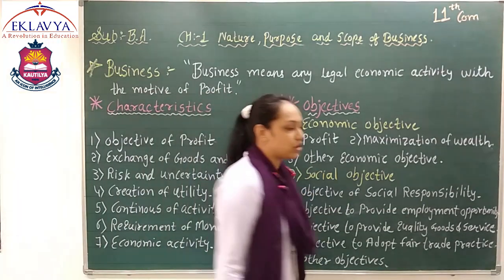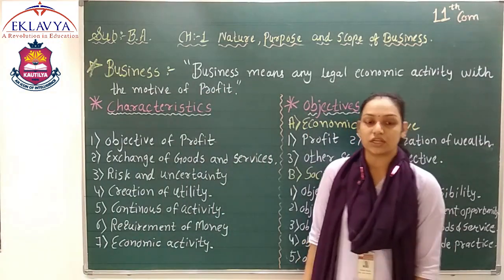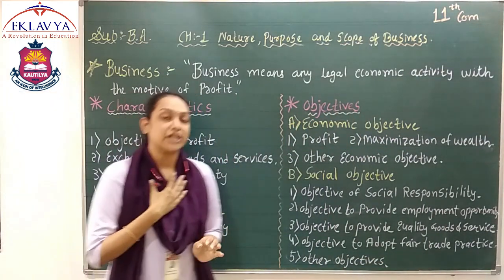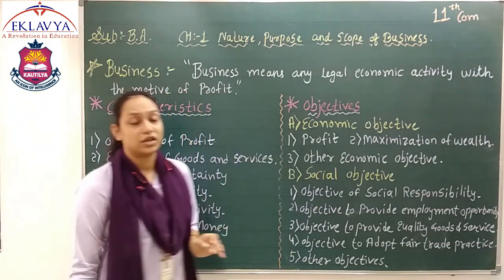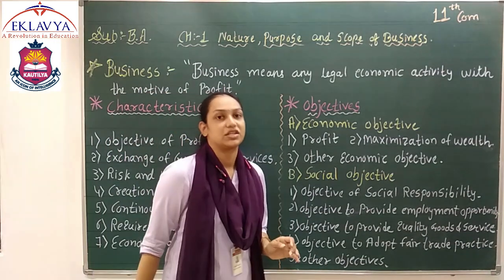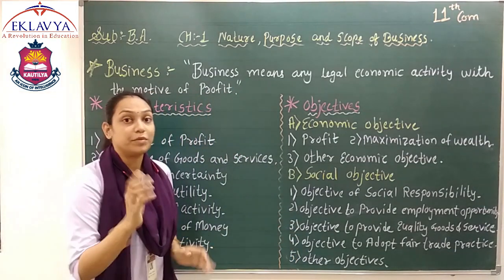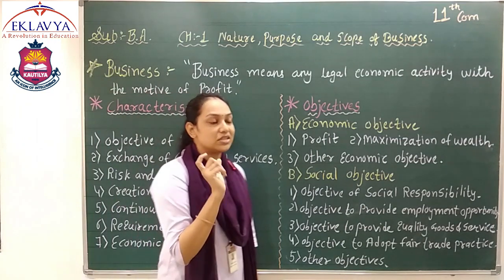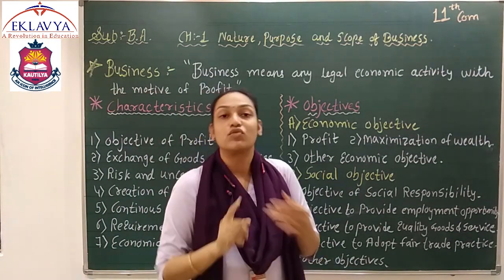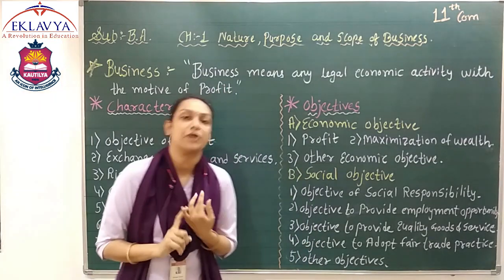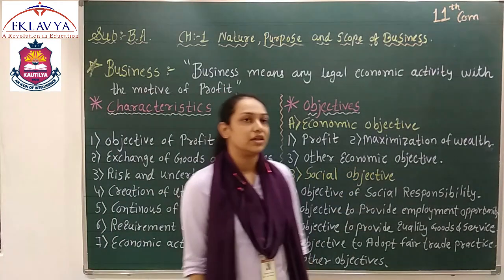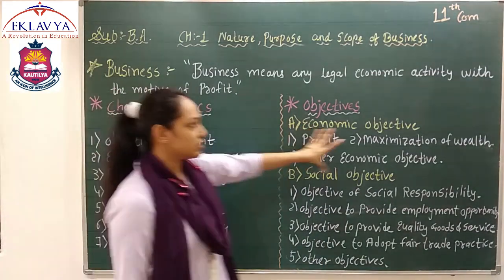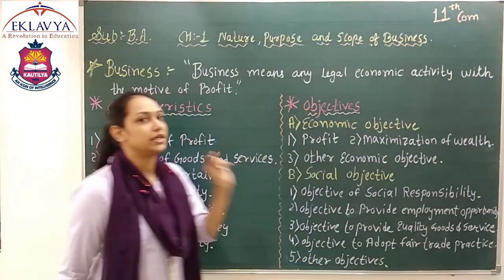The third is other economic objectives. We need prestige in the market. If we have a good product, we should have a brand, a business recognized by our name — our name should be known in the market. That is included in the other economic objective. Because if our prestige is good in the market, it will help us earn more profit. So that is included in the other economic objective. Economic objectives are all connected with profit and money.